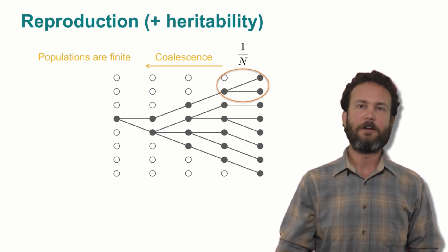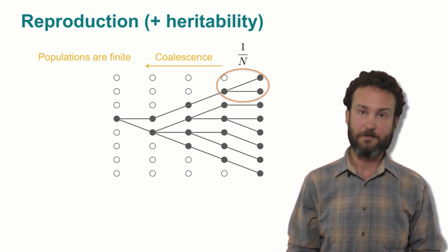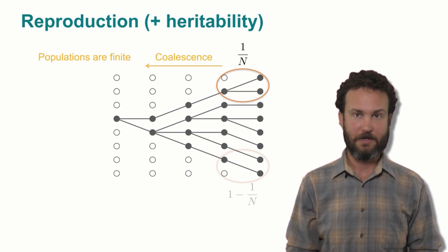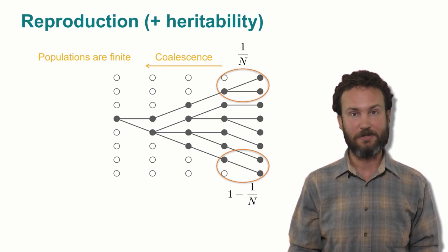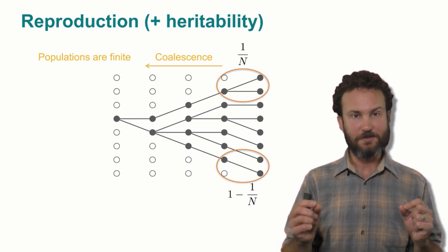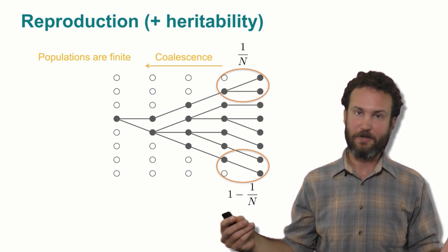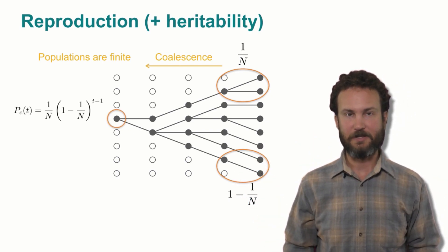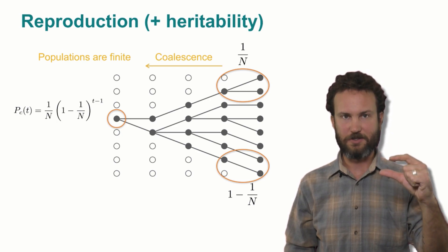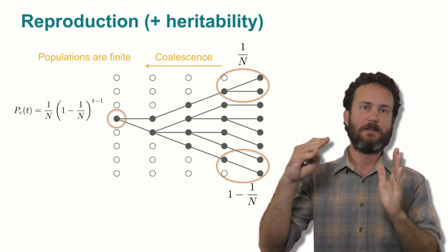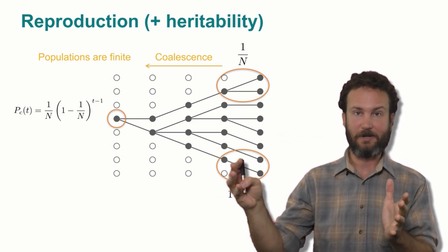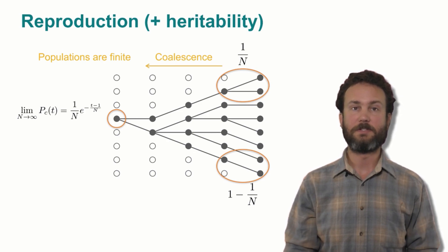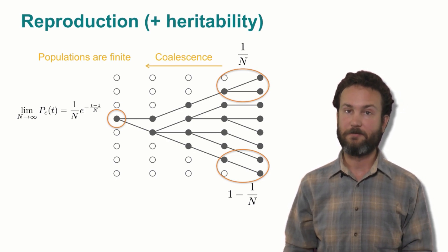What this theory allows us to do is make very simple mathematical calculations that are very powerful. So for example, the probability of two individuals finding a common ancestor one generation ago is simply 1 over n. And the probability of that not happening is simply 1 minus 1 over n. Using those two probabilities, we can then calculate the probability of finding 1 universal common ancestor t generations in the past. And that's simply the probability of finding a common ancestor one generation ago, which is the penultimate generation, times the probability of not finding a common ancestor any time before that. Taking the limit of a very large population size, this reduces to a simple exponential distribution, which has very nice mathematical properties that we can make further use of.